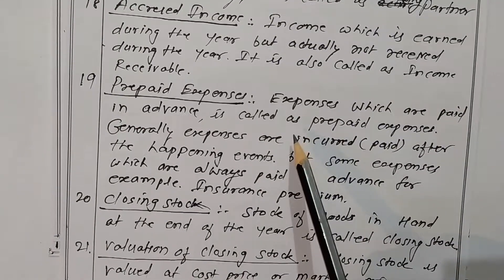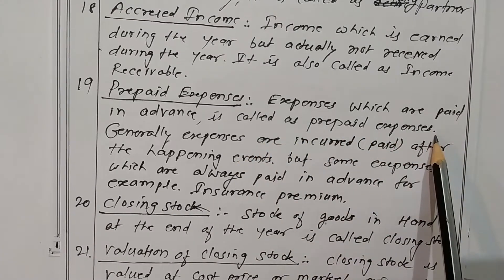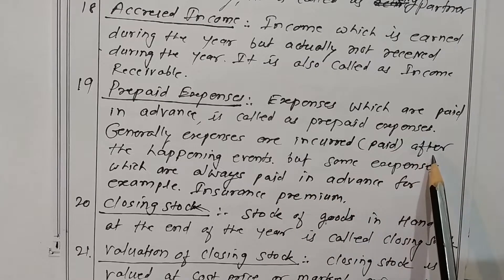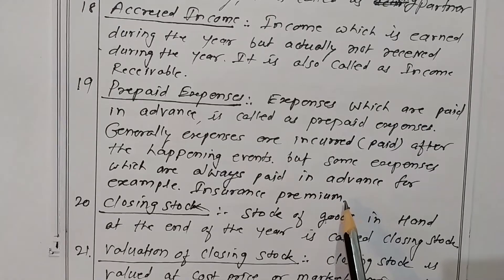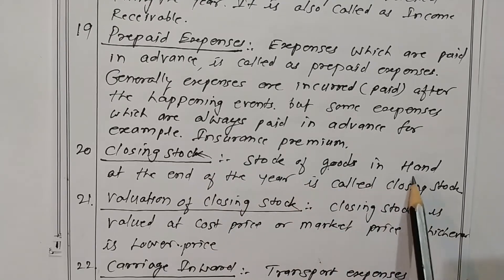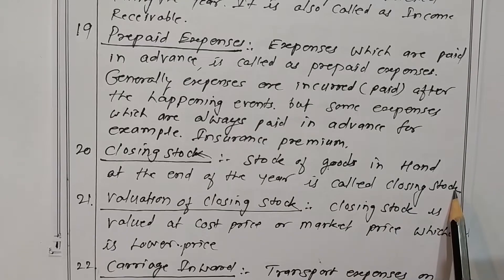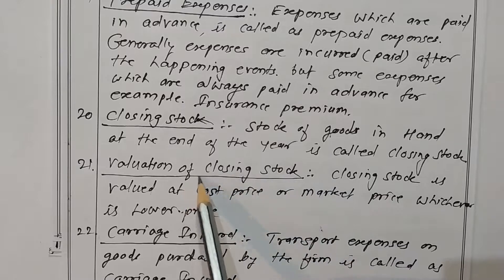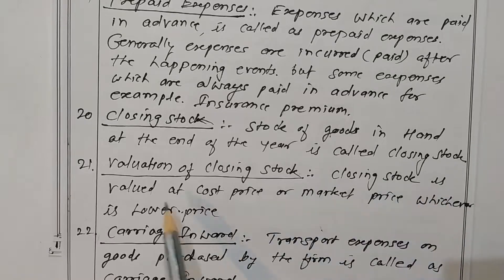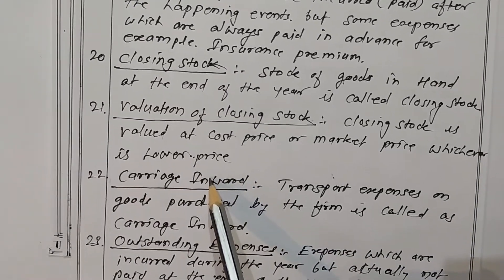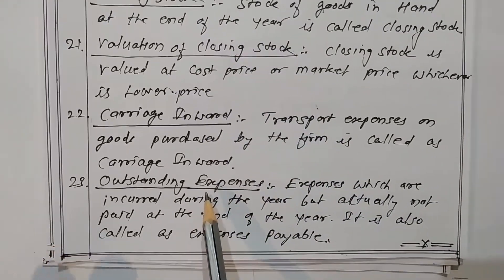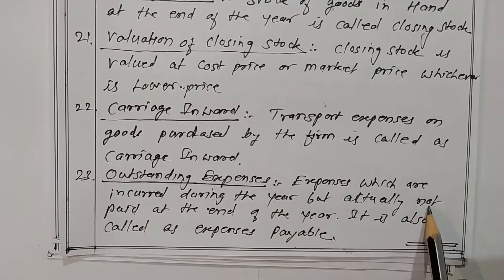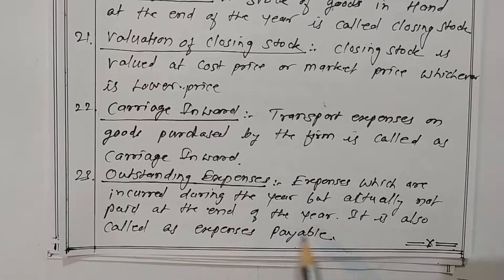What is prepaid expense? Expenses paid in advance are called prepaid expenses. Generally expenses are incurred after the happening of events, but some expenses are always paid in advance — for example, insurance premium is always paid in advance. What is closing stock? The stock in hand at the end of the year is called closing stock. Closing stock is valued at cost price or market price, whichever is lower. What is carriage inward? Transport expenses of goods purchased by the firm is called carriage inward. What are outstanding expenses? Expenses incurred during the year but not actually paid at the end of the year are called outstanding expenses, also known as expenses payable.